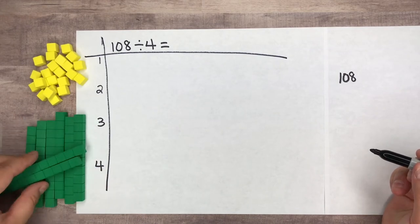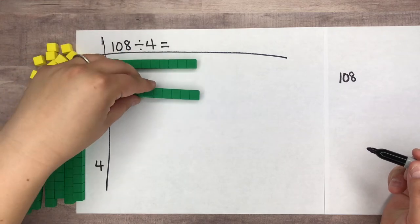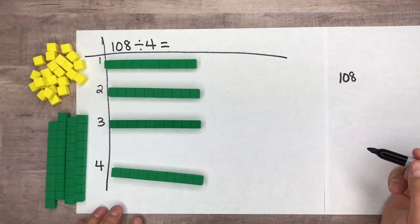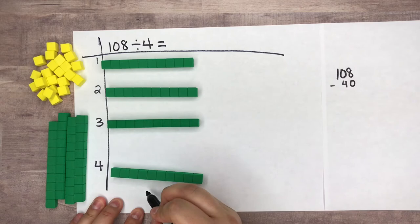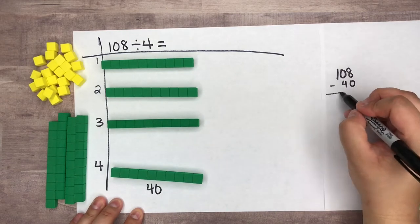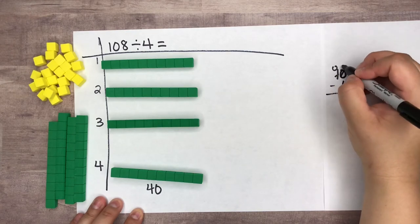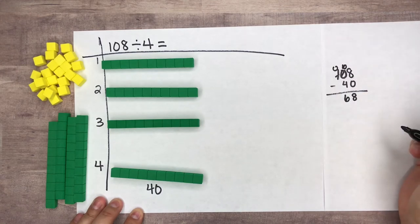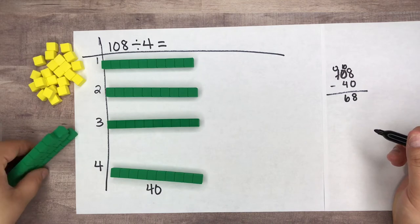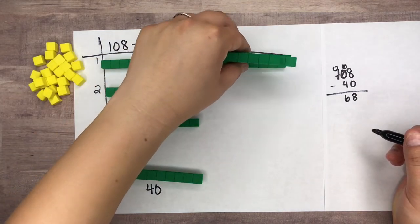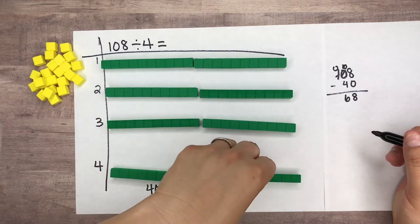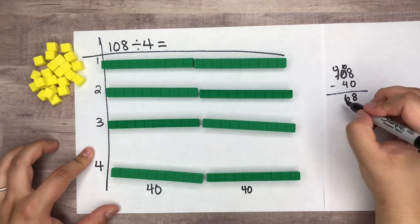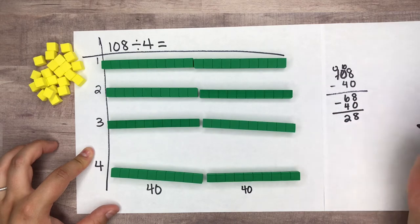Taking out 10, 20, 30, 40 — I no longer have 108 because I took out 40. 108 minus 40 is 68. Let's take out another 4 tens: 10, 20, 30, 40. 68 minus 40 is 28, and that's how many I have left.